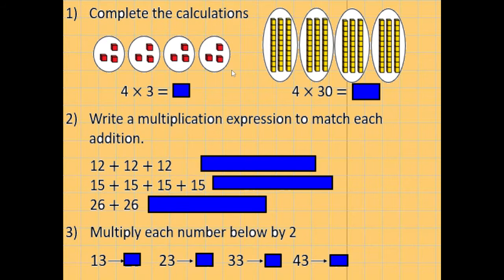All right, so this first set is all about related number facts, which is what we were doing on Monday. So we have 4 times 3, 3, 6, 9, 12. And that gives us the answer of 12 there. So I'm going to use that to help me solve 4 times 30. So we've got 30, 60, 90, 120.